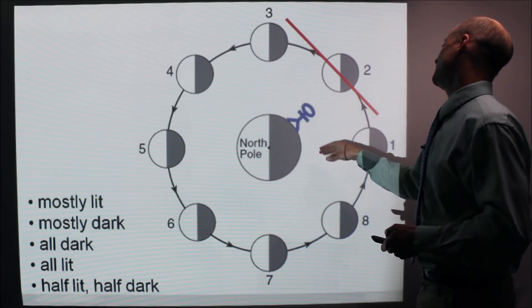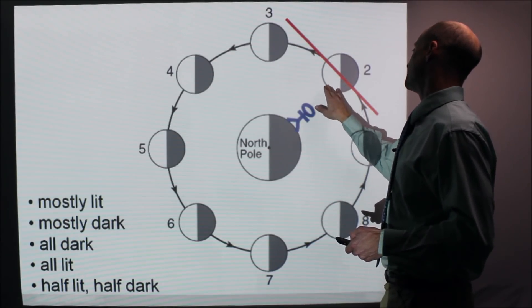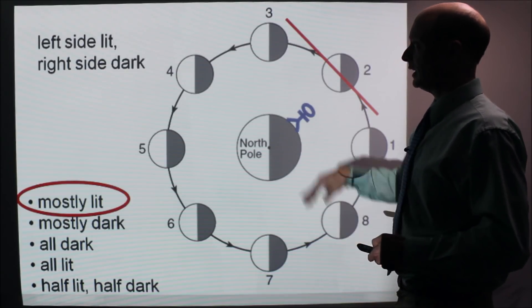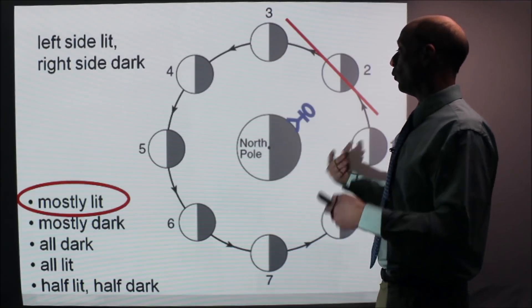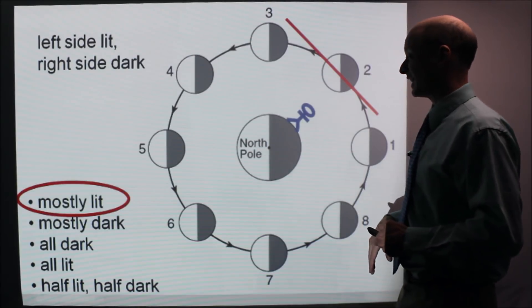It's mostly lit, what they see, and the right side dark, or left side lit. So, mostly lit, left side lit. Mostly lit, left side lit, right side dark. Now, what would that look like? And it takes some thinking to really get that down and practice. It's going to look like this.